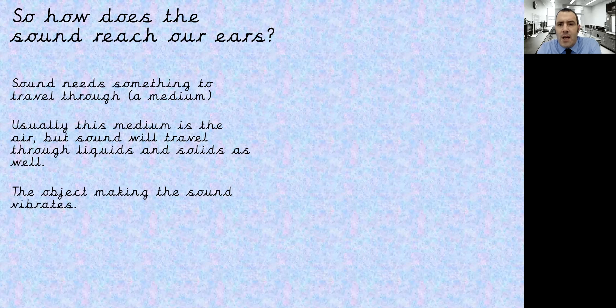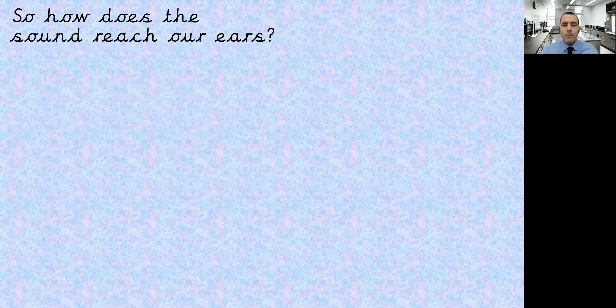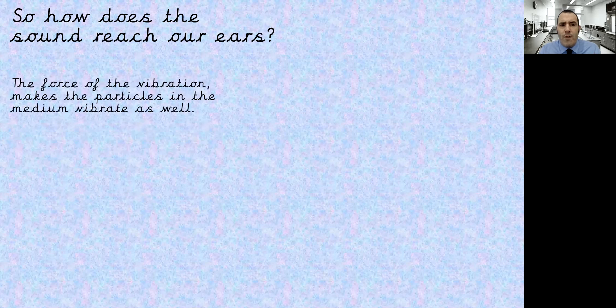The object making the sound vibrates. So the force of the vibration makes the particles in the medium vibrate as well. So we know that the air around us is made up of oxygen and nitrogen, carbon dioxide and lots of other particles. So my voice, the vibration coming from my throat comes out through my mouth, makes the air around me vibrate, and it gets picked up by the microphone for my laptop which I'm recording this lesson for you on. Now the computer does something similar to what the ear does, and we're going to move on to that shortly. We're just going to have a look at how that sound travels.